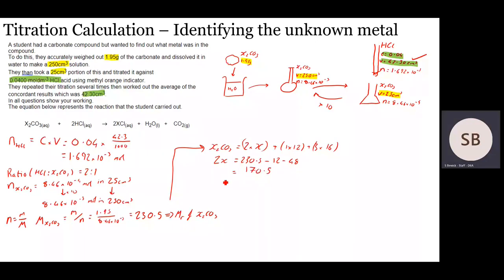But we don't care what 2X is, we care what X is. Basically we've just taken away the carbonate. Here we're dividing by 2. So the molar mass of X is 85.2. So you look on your periodic table. What element has a mass close to 85.2? And it comes out as rubidium.